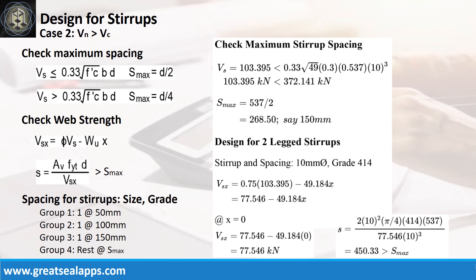The maximum stirrup spacing is 150 mm. The web strength at face of support is 77.546 kN, with initial spacing at 450.33 mm.